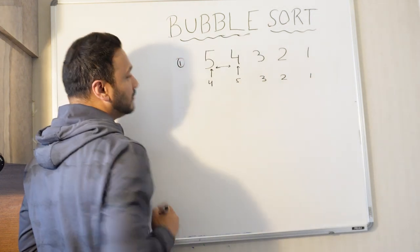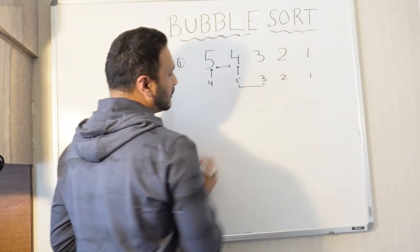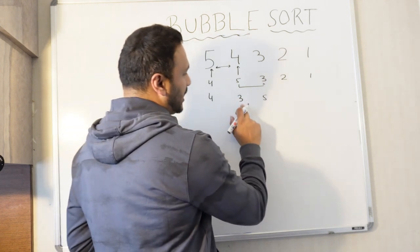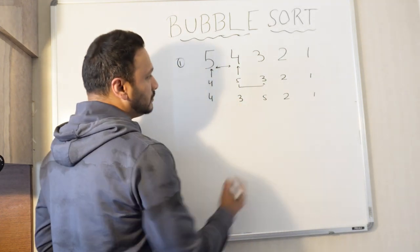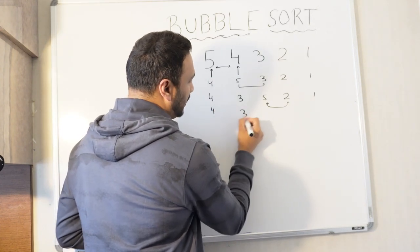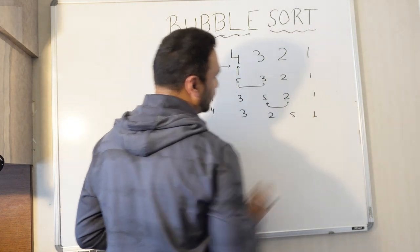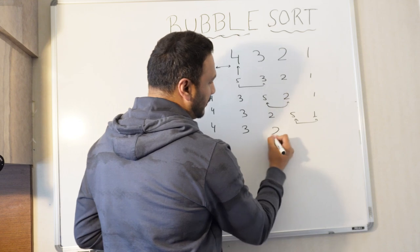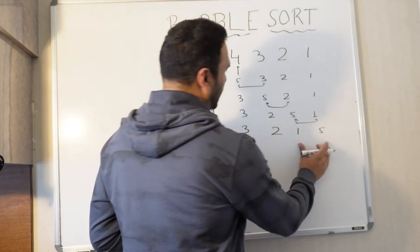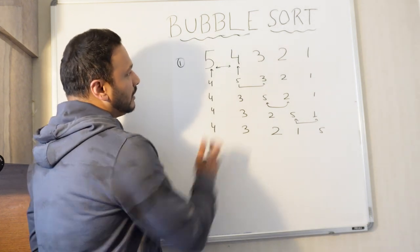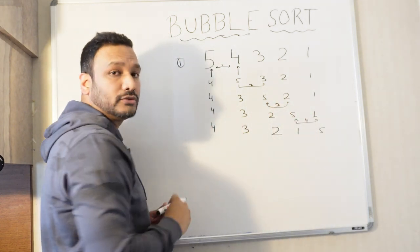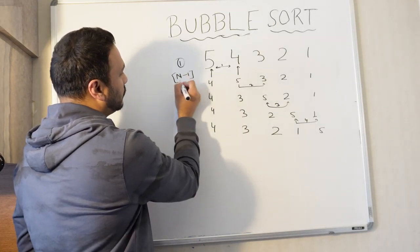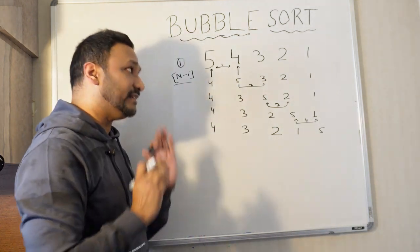In the first iteration, the first swap is done: we get [4, 5, 3, 2, 1]. Then we check 5 and 3 — 3 is less than 5 so we swap: [4, 3, 5, 2, 1]. Then check 5 and 2 — swap: [4, 3, 2, 5, 1]. Then check 5 and 1 — swap: [4, 3, 2, 1, 5]. All sets are done. We performed four swaps, which is n minus 1 times for n elements. That completes the first iteration where i equals 1.